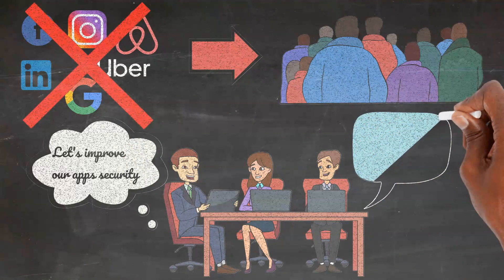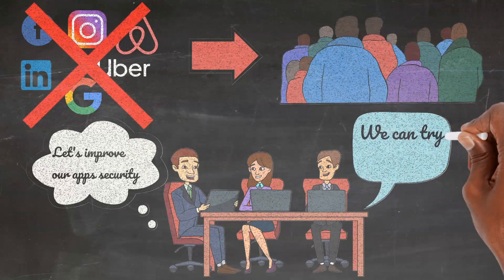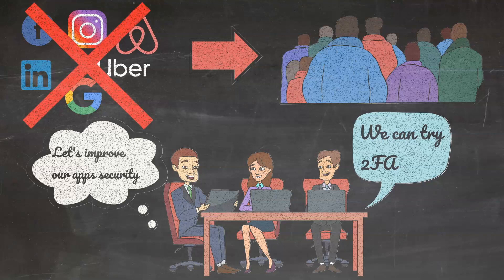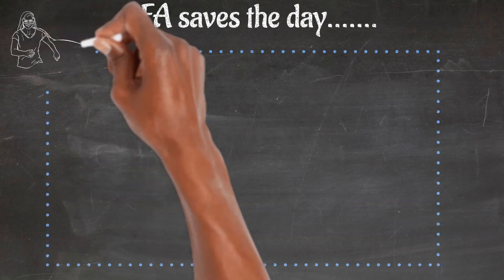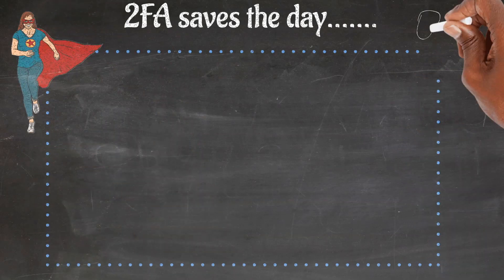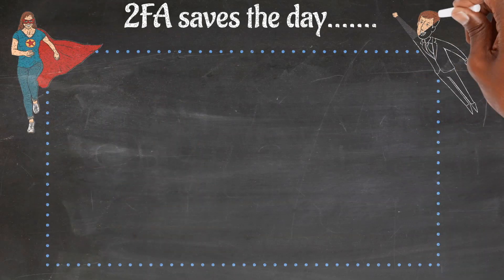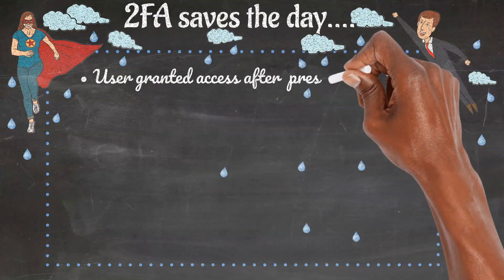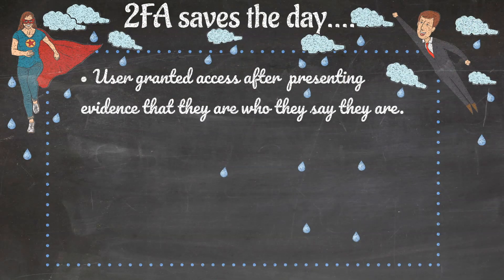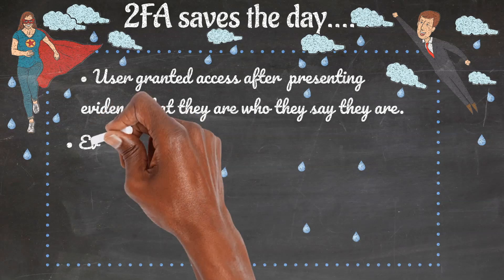To cap this menace, a solution would be to add an extra layer of protection to users' accounts in the form of two-factor authentication, also called 2FA. Two-factor or multi-factor authentication is an electronic authentication method in which a user is granted access to a website or application only after successfully presenting two or more pieces of evidence that they are who they say they are. Examples of additional pieces of information could be: